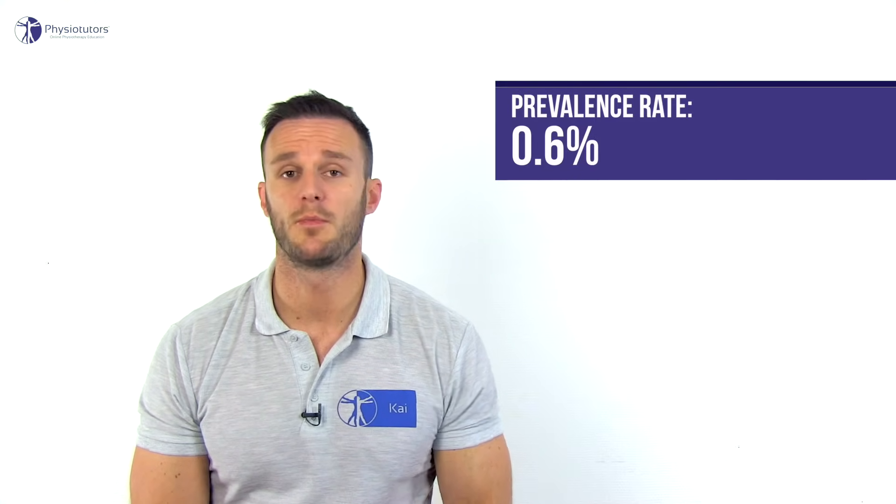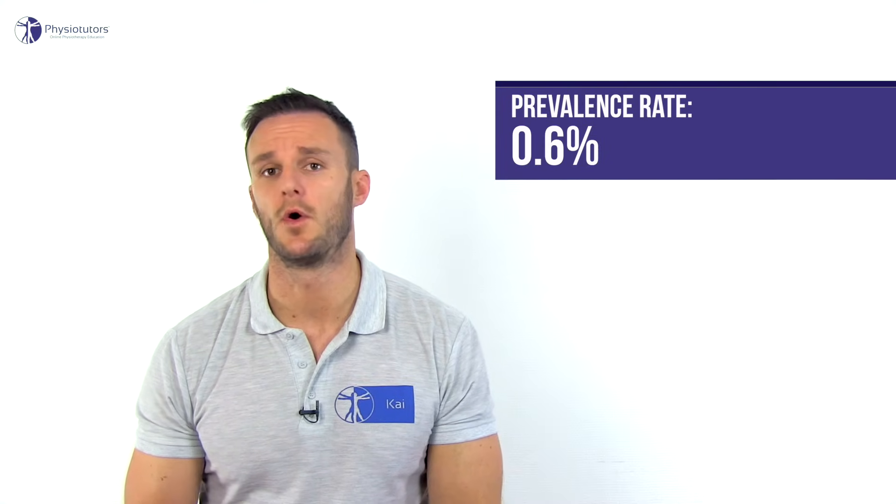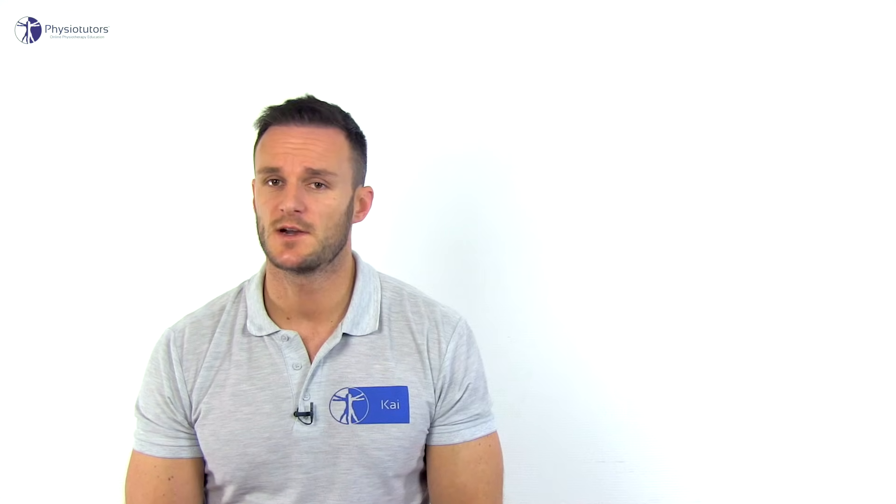Welcome back to Physiotutors. Upper cervical spine instability has a prevalence rate of 0.6% according to Beck et al. in 2004, and is associated with inflammatory conditions such as Rheumatoid Arthritis and Ankylosing Spondylitis, as well as trauma and congenital deviations such as Down syndrome or Marfan's disease. In order to safely apply manual therapy techniques to the cervical area, it is necessary to screen for possible upper cervical instability.